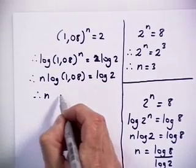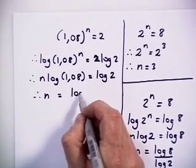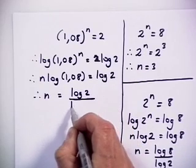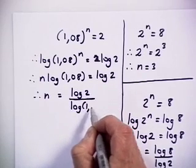We can divide by log 1.08 on both sides. So n equals log 2 divided by log 1.08.